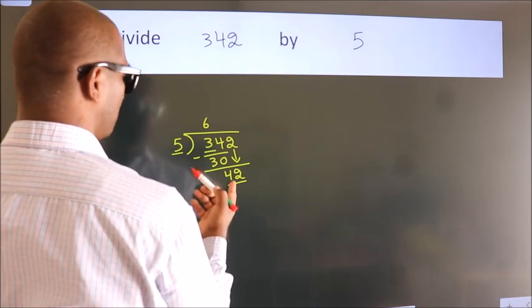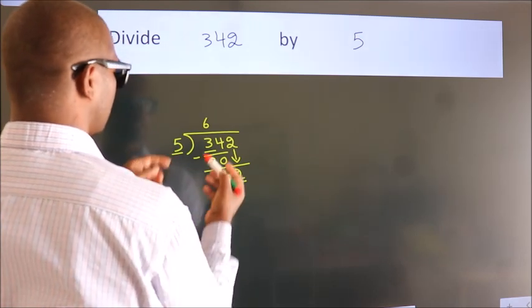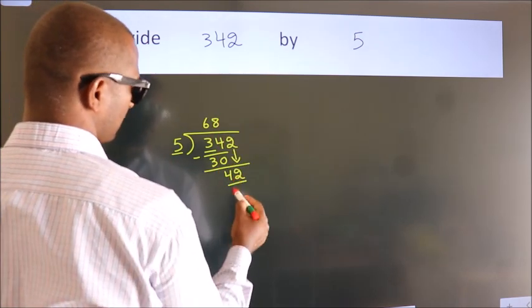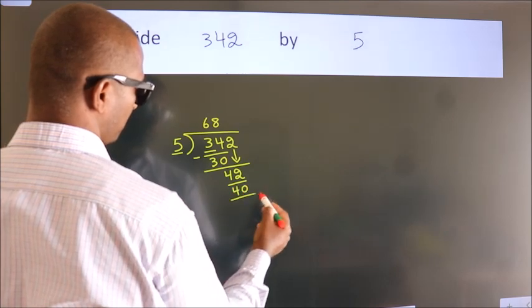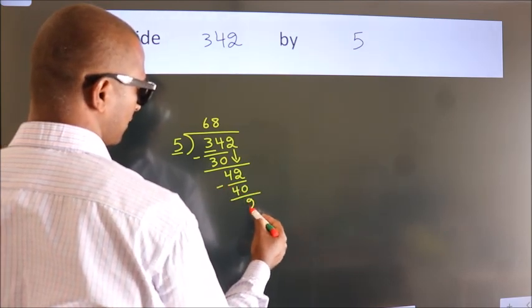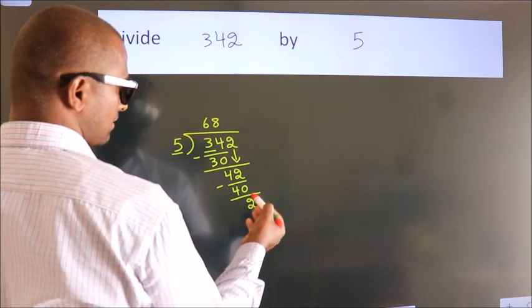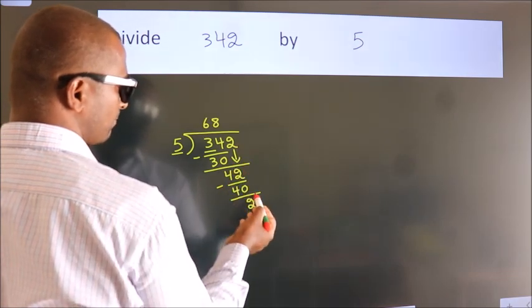A number close to 42 in the 5 table is 5 times 8 equals 40. Now we subtract. We get 2. After this, no more numbers to bring down.